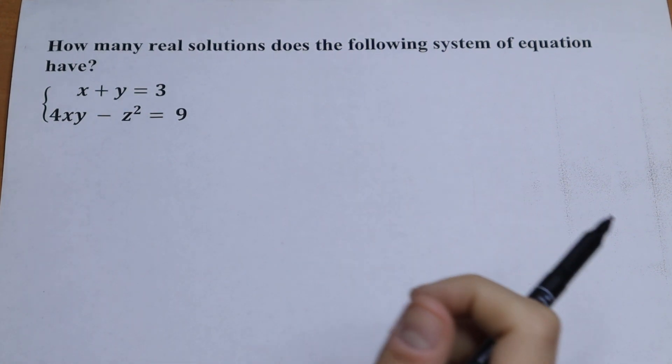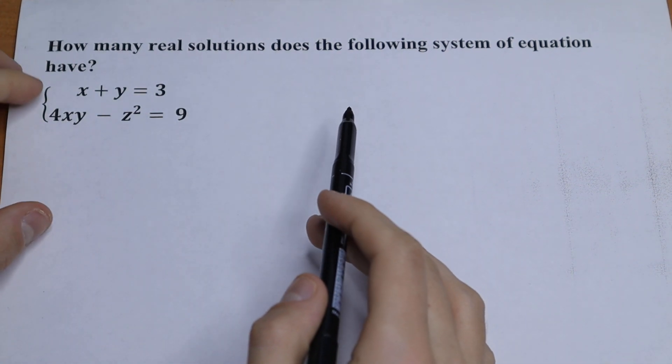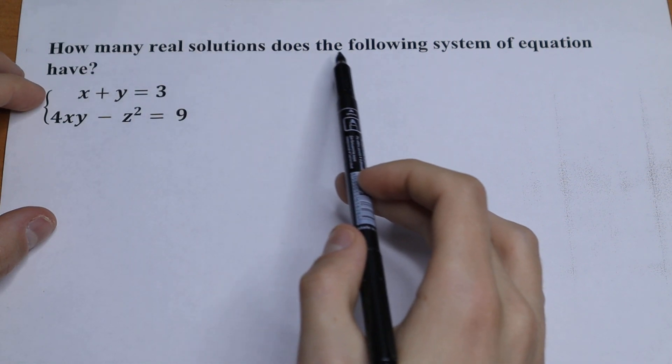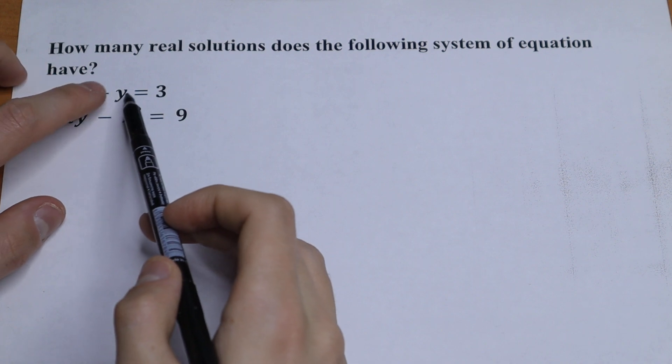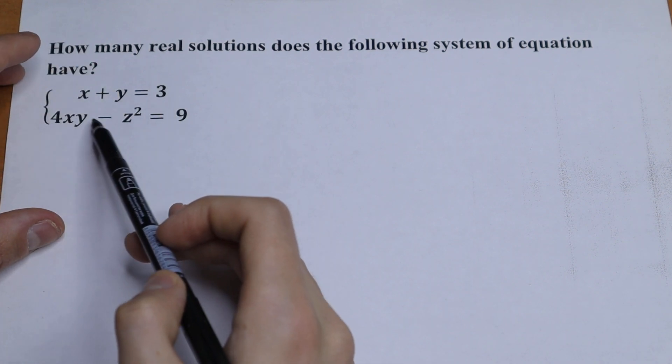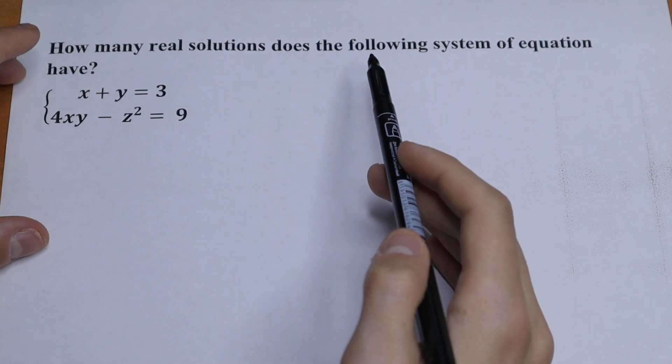Hello everyone, welcome back to MathMove. Today we have an interesting algebra problem. We need to find how many real solutions does the following system of equation have. So we have the system of equation x plus y equal to 3 and 4xy minus z square equal to 9.